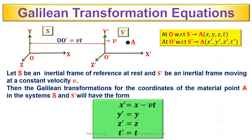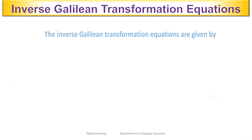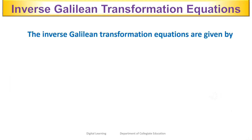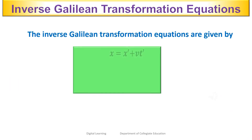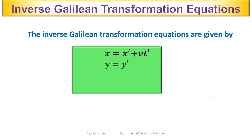The Galilean transformation equations have the form: x' = x − vt, y' = y, z' = z, and t' = t. These equations are known as the Galilean transformation equations. The inverse Galilean transformation equations are: x = x' + vt', y = y', z = z', and t = t'.